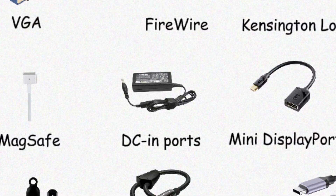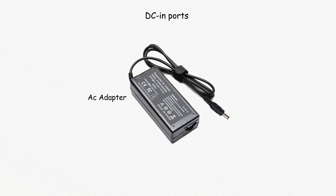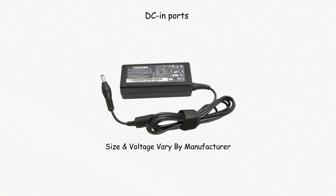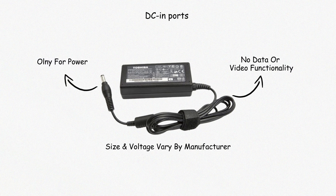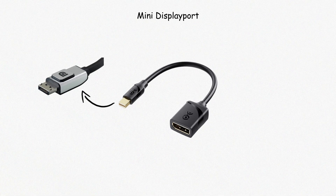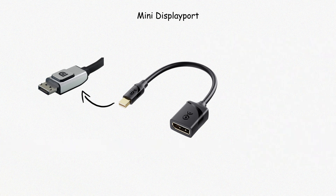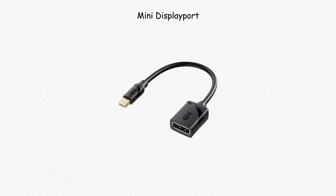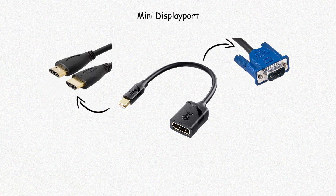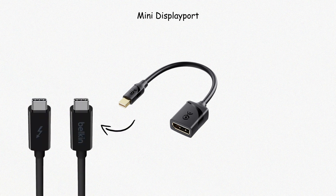DC-in ports are circular power connectors used on many Windows laptops. They deliver power from an AC adapter to the internal battery. The size and voltage of DC-in ports vary by manufacturer, making them non-interchangeable. These ports are typically used only for power and offer no data or video functionality. Mini DisplayPort is a smaller version of DisplayPort, used on older MacBooks and Microsoft Surface devices. Like full-size DisplayPort, it supports high resolutions and audio, and can be adapted to HDMI, VGA, or DVI. It has largely been replaced by USB-C and Thunderbolt in newer machines.